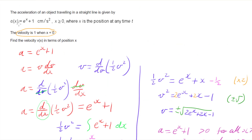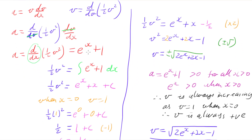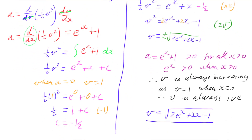So there we have it. When acceleration is given as a function of displacement, we use the identity that d/dv of a half v squared equals velocity, combined with the chain rule that acceleration equals v dv/dx. Joining those two together gives a differential equation, which we solve and then simplify using initial conditions.